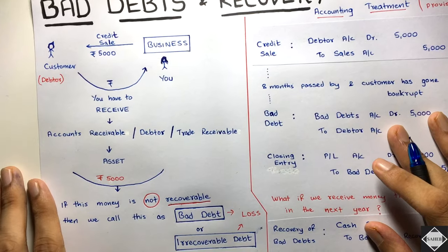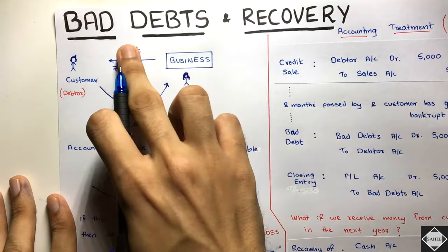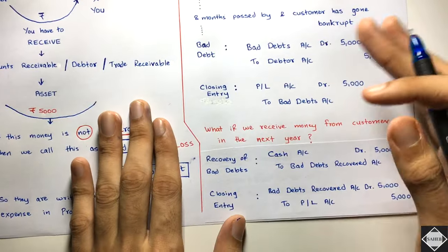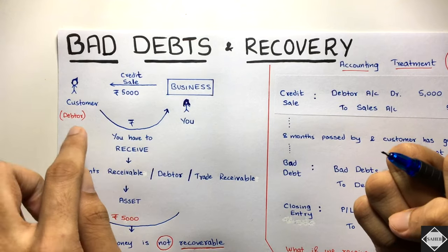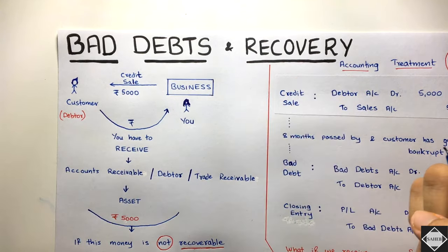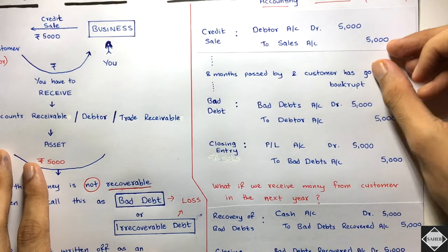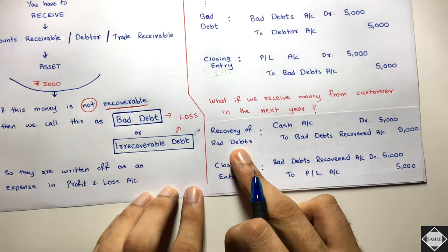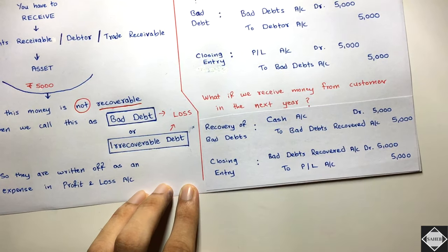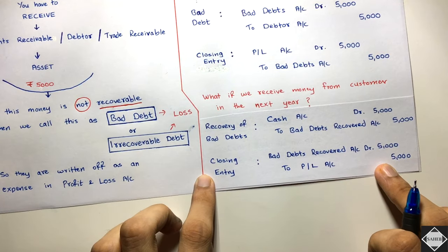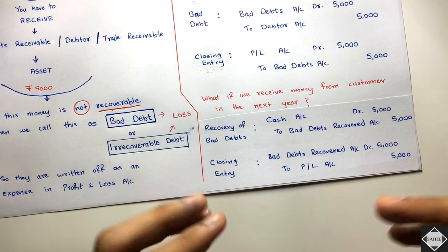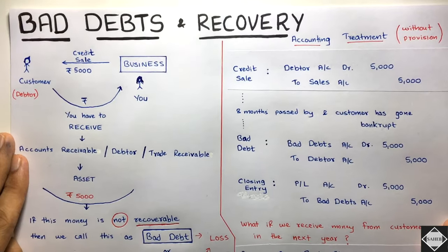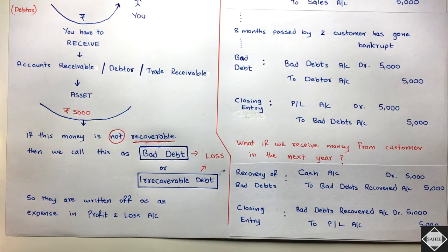In summary: whatever amount is irrecoverable is bad debts. After writing off bad debts, if money is received from that customer in the next period, that is called recovery of bad debts. The journal entries are straightforward — credit sale, then bad debts recording with loss and asset cancellation, then closing to P&L; and for recovery, debit Cash, credit Bad Debts Recovered, then close to P&L. That's it for this video.